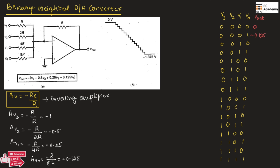In the same way, if the input is 0010, then 1 is across V1. The gain of V1 is −0.25, so the output is −0.25 × 1 = −0.25 V. If the input is 0011, we have 1 across both V1 and V0, so their gain values are added: 1 × (−0.25) + 1 × (−0.125) = −0.375 V.